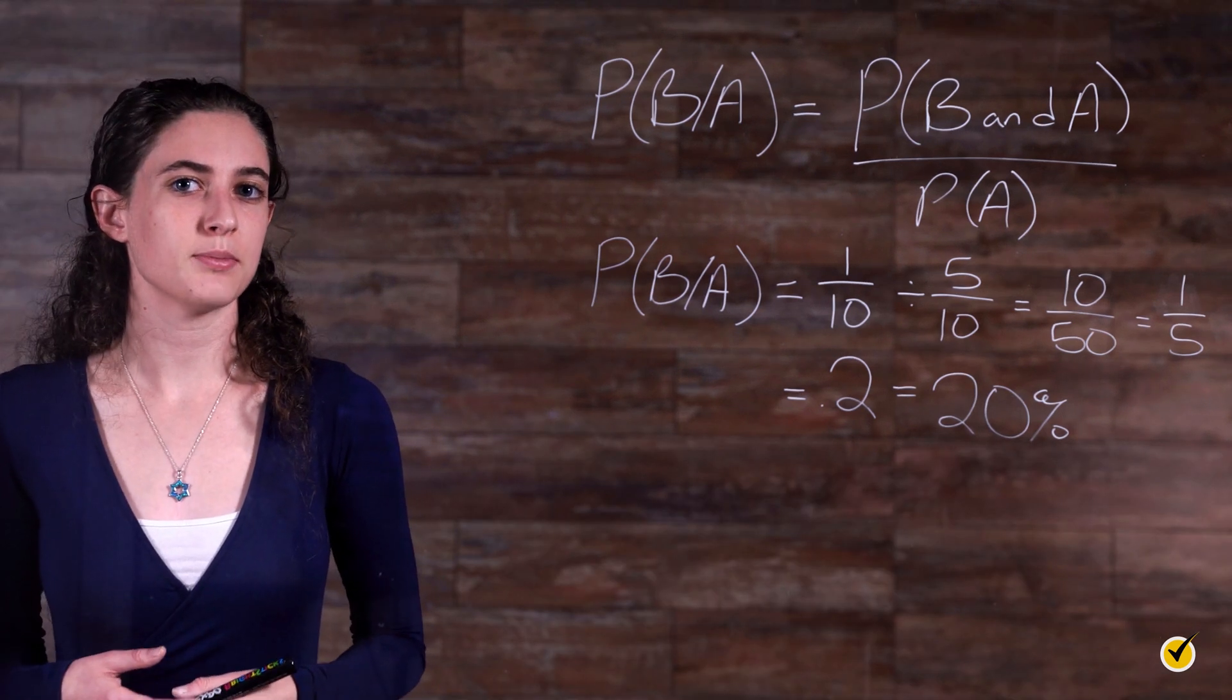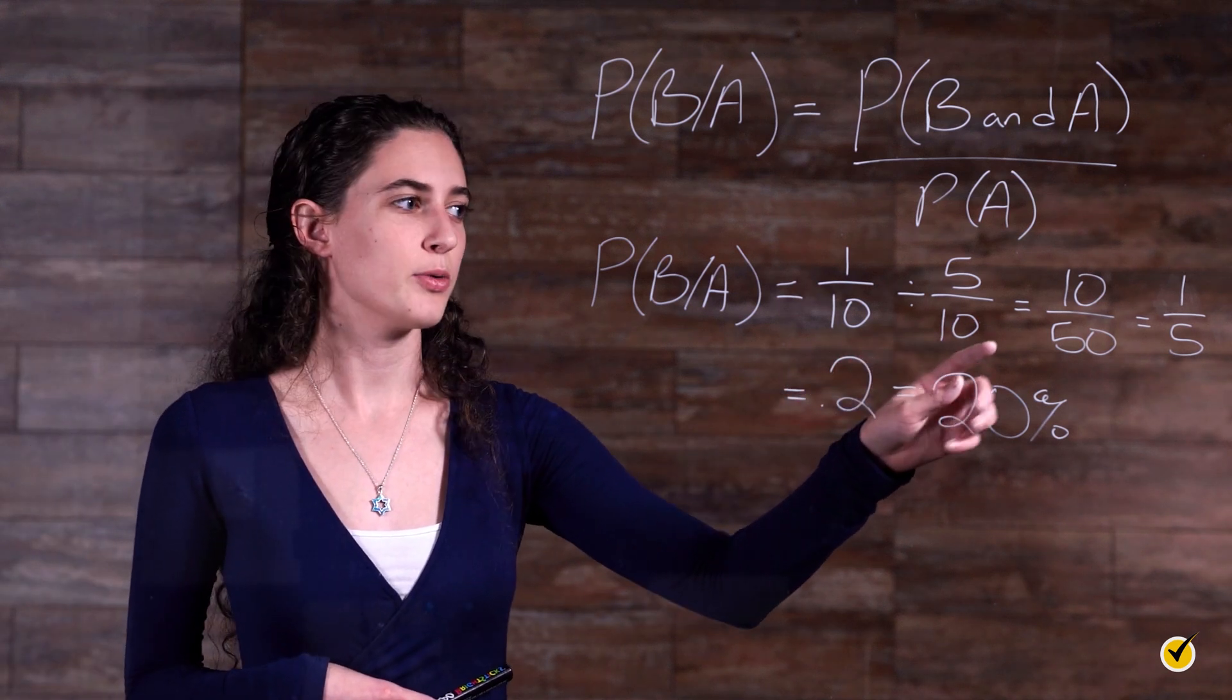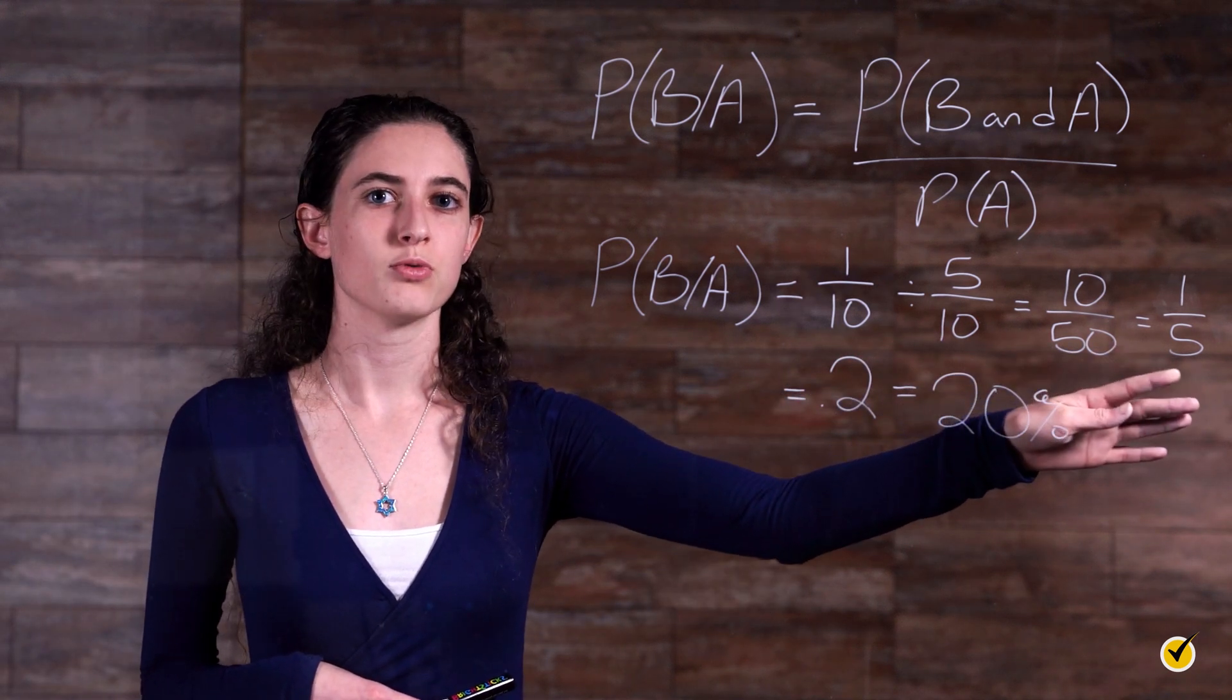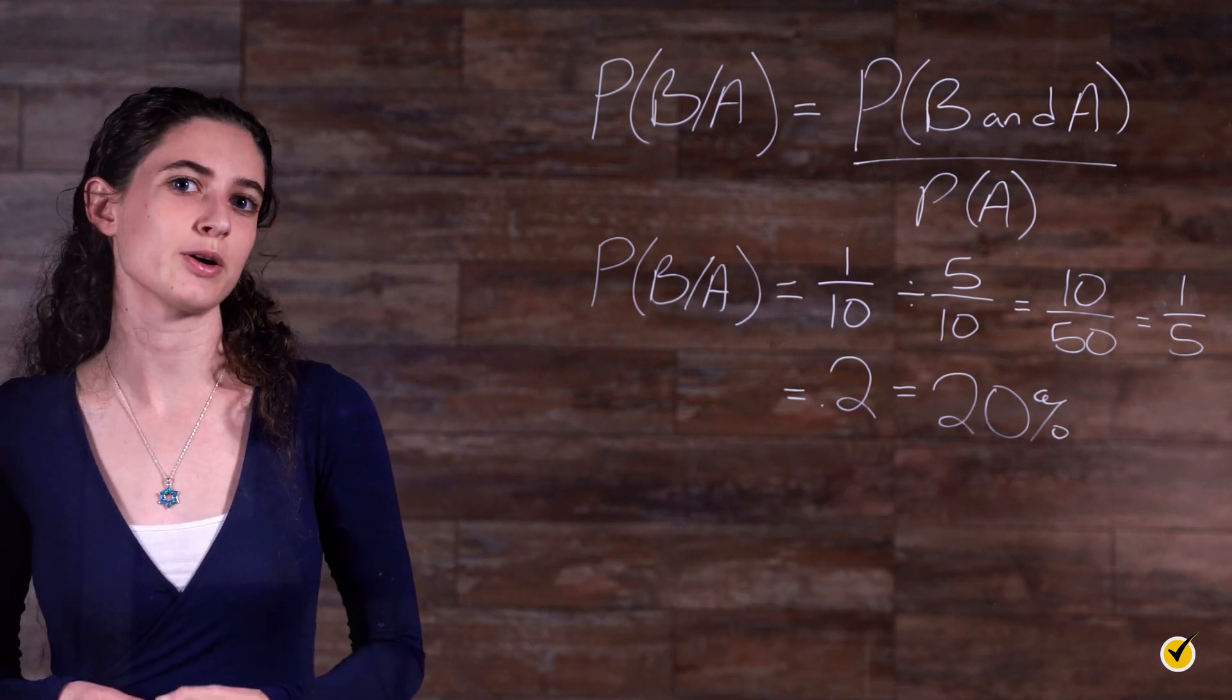Now that our formula is complete, we can simply divide 1 over 10 by 5 over 10, and we get 1 over 5, which is equal to 0.2, or 20%, just as we figured out from our drawing.